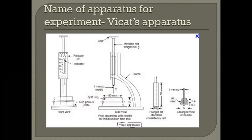That needle can be used to determine the initial setting time of cement. Then we have the plunger for the standard consistency test with 10 mm diameter and 50 mm height. The last needle is used to determine the final setting time of cement.